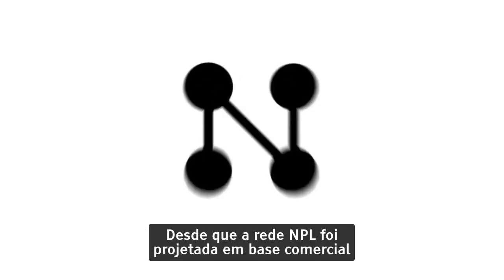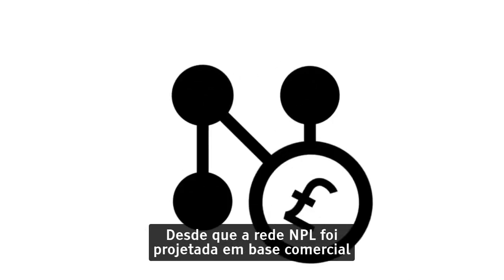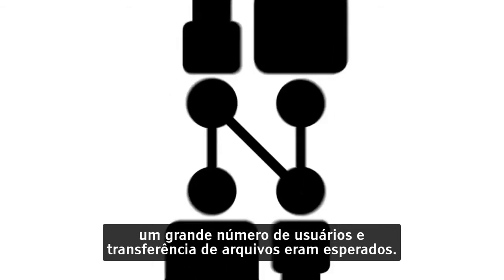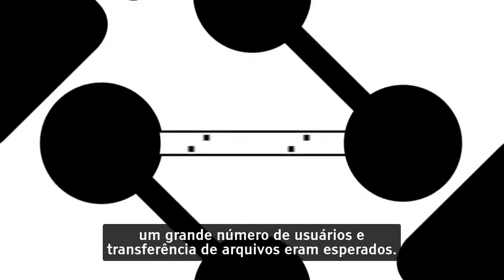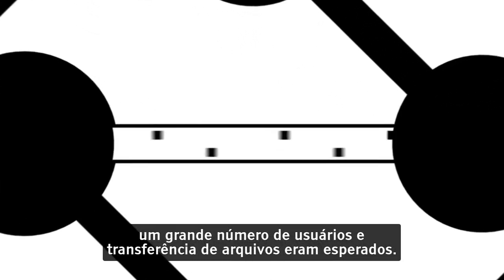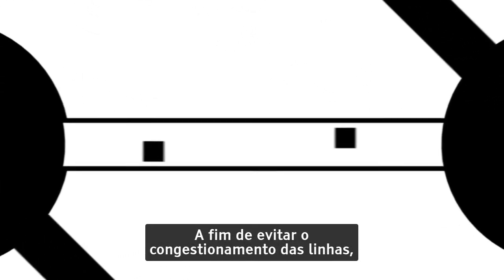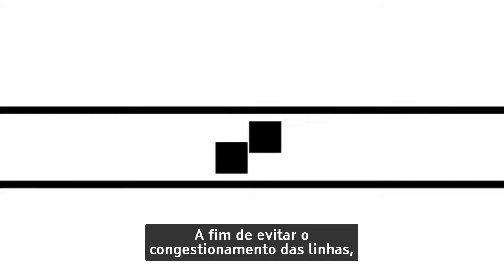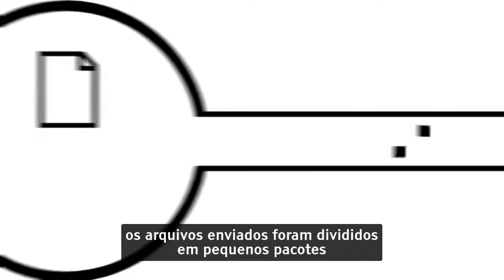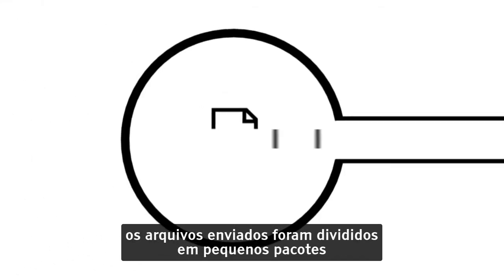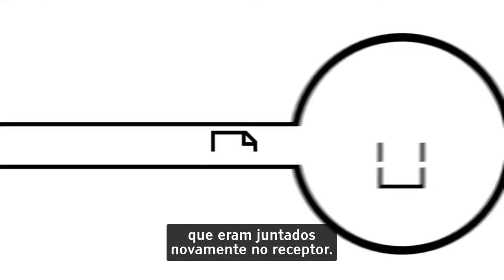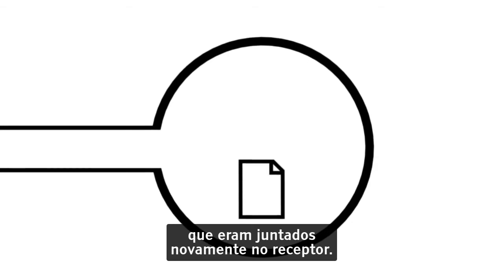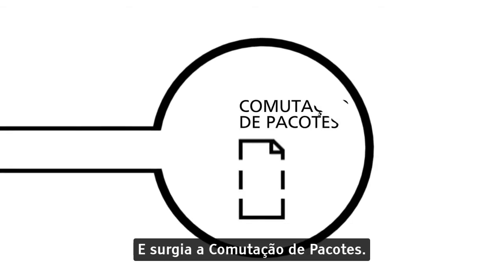Let's take a short detour to England. Since the NPL network was designed on a commercial basis, a lot of users and file transfers were expected. In order to avoid congestion of the lines, the sent files were divided into smaller packets, which were then put together again at the receiver. Packet switching was born.